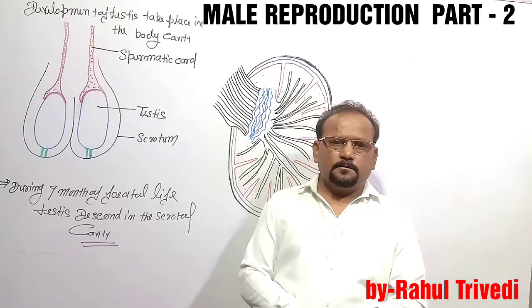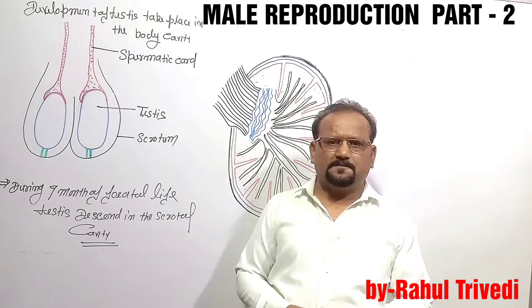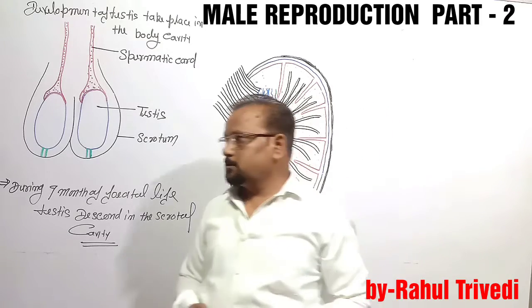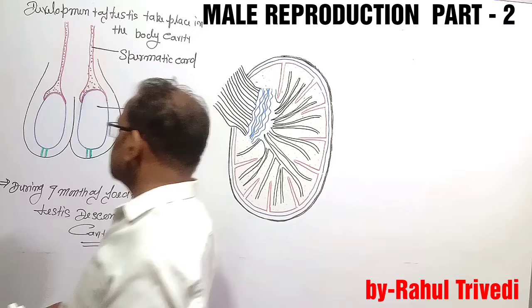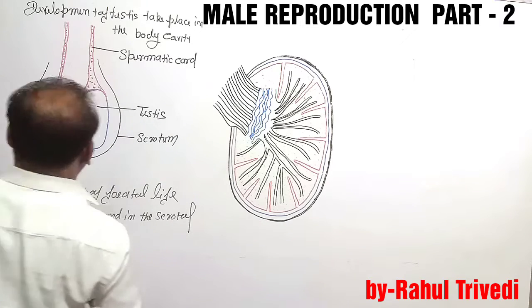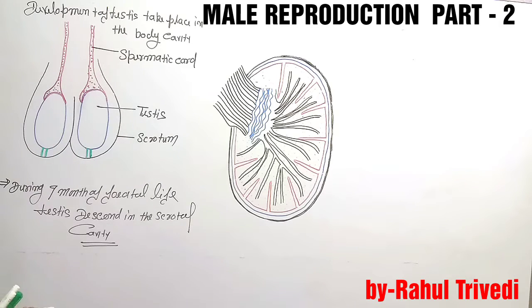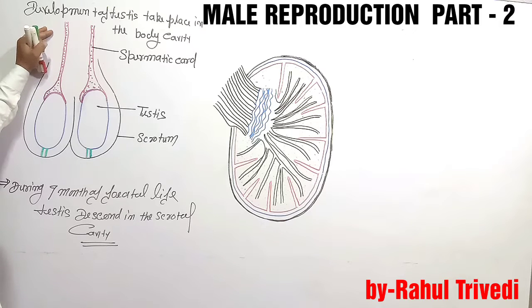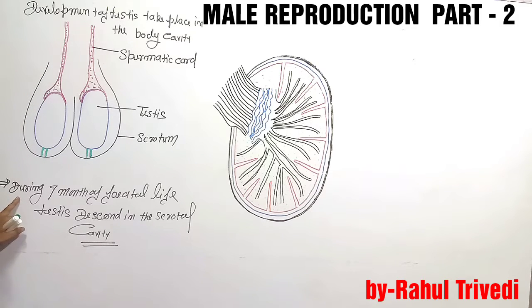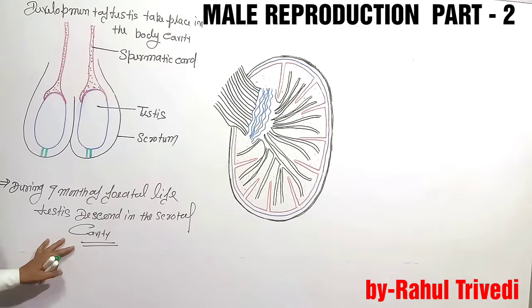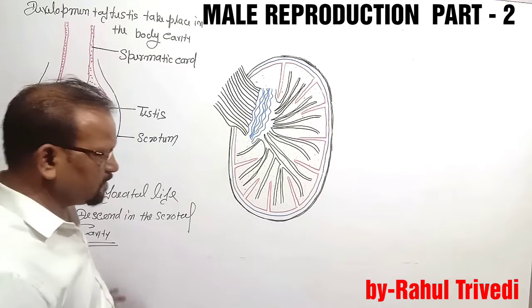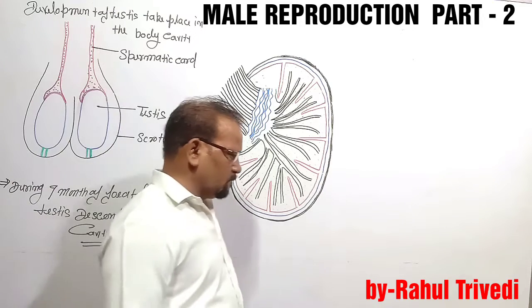In the previous video, we learned that the testis develops in the body cavity. During 7 months of fetal life, the testis descends into the scrotal cavity under the influence of the hormone testosterone.